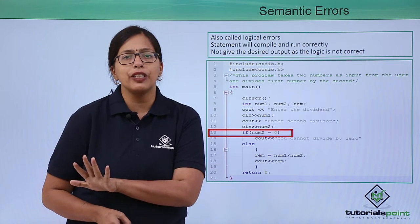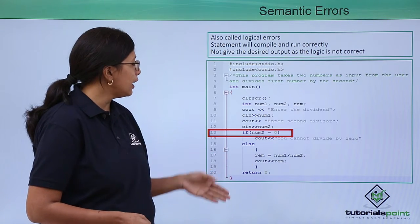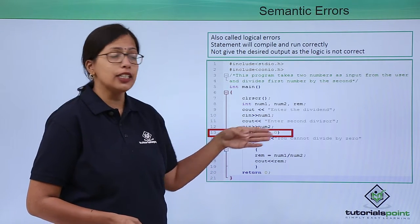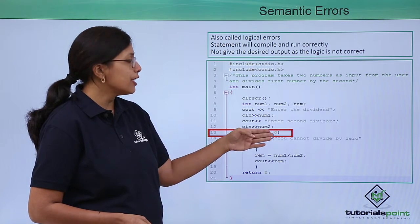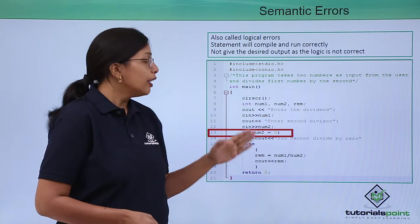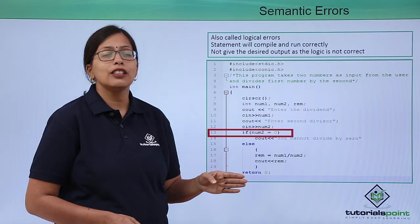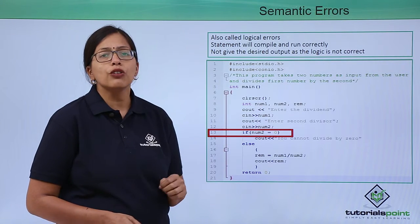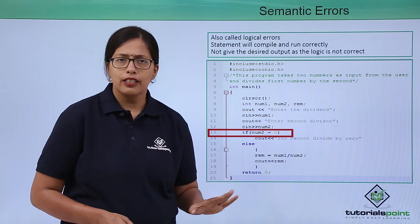This is being done in line number 13: if num2 is equal to zero. Now here there is a logical error. num2 is equal to zero is syntactically correct, there is no syntax error, but there is a logical error.